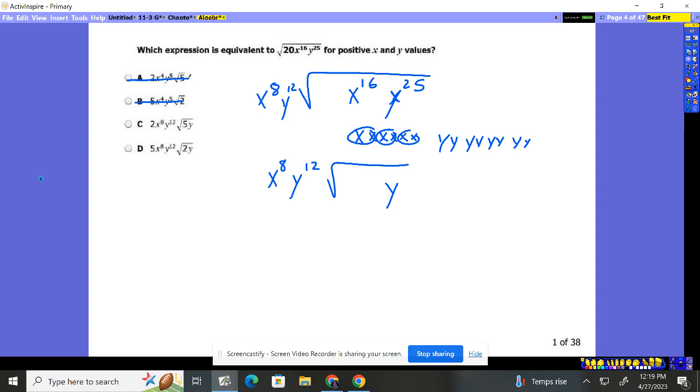Pretty easy. If we break 20 down into its prime factorization, two times 10, can't go further. Two times five, can't go further. So when we have that, it's really a two times two times five in here. We need a pair to come out, so it's the two that comes out and the five is left behind.